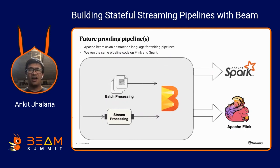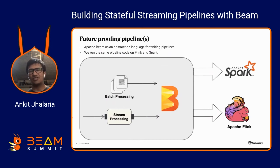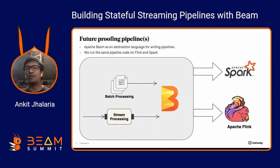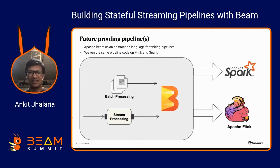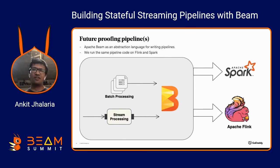Another important reason we chose Beam is future-proofing pipelines. Since Beam is an abstraction language, our pipelines are written once in Java and run on different runners—currently Flink and Spark. If a third runner becomes available, we can explore it without rewriting. If we programmed directly against Flink APIs, we'd be locked into Flink. Beam gives us the flexibility to potentially switch runners in the future, which was a key consideration in our choice of Beam.